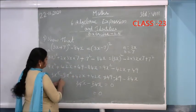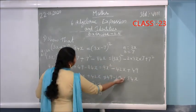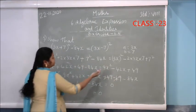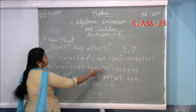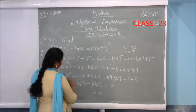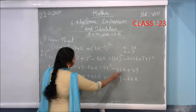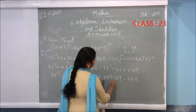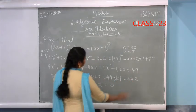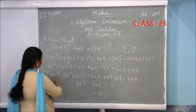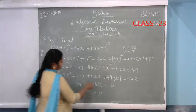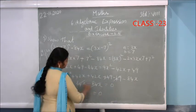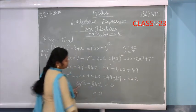Bringing terms to the right-hand side — 3 terms — when you bring them to the left-hand side the sign will change. So plus becomes minus: minus 9x² will come, plus 42x, and this 49 becomes minus 49. Then 9x²-9x² cancels, 49-49 cancels, and 84x-84x also cancels. At last the answer is zero.